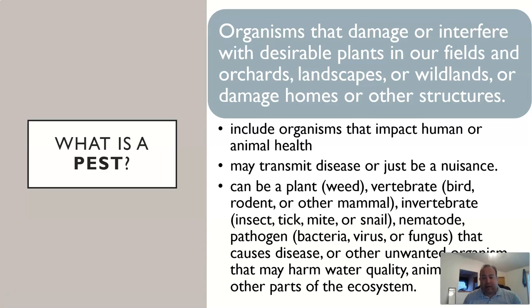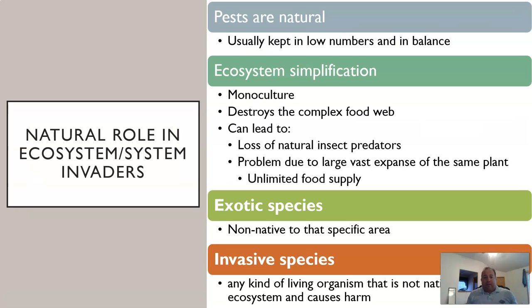Pests include plants, vertebrates, invertebrates, nematodes, pathogens, and unwanted organisms that could cause water quality issues or harm any part of the ecosystem. We could be talking about weeds, birds, rodents, mammals, insects, ticks, mites, snails, bacteria, viruses, fungi — all sorts of different things. We're going to pick a few to focus on today that are really affecting the forestry industry.